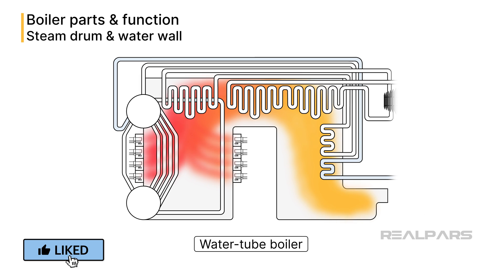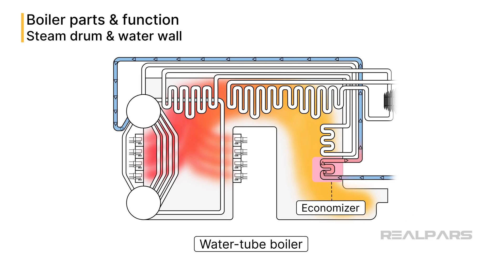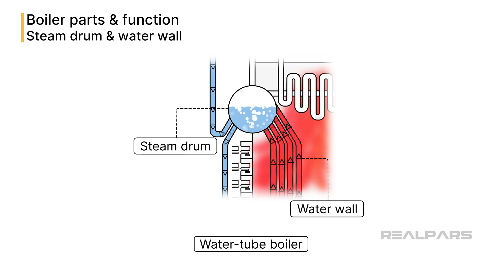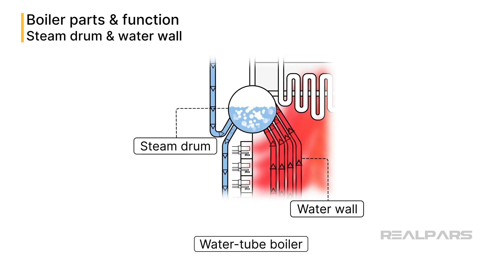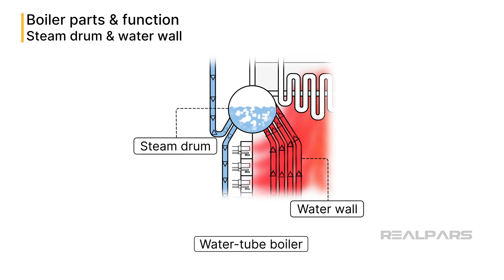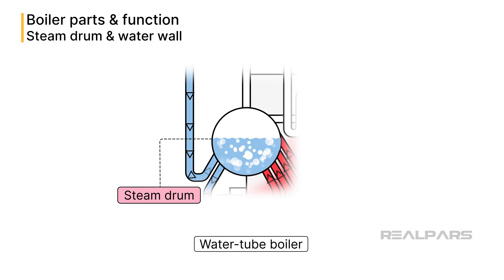The heated feed water that came out of the economizer then enters the steam drum via the feed water inlet. Next, it flows through the downcomer, mud drum, and water wall. The water wall, consisting of closely spaced tubes lining the interior of the boiler's combustion chamber, absorbs heat from the combustion gases. Heat transfer in the combustion chamber occurs through radiation and convection, heating the water inside these tubes. The heated water reaches the top of the water wall tubes as a mixture of water and steam, then goes toward the steam drum where further separation occurs.